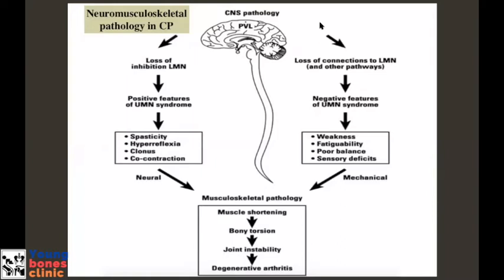The presentation can be positive or negative. Positive signs are mostly spasticity, hyperreflexia, clonus, and contractions of muscles. Negative signs include weakness, poor selective control, poor balance, and sensory deficits. Ultimately all of them lead to multiple musculoskeletal problems, especially muscle shortening, bone torsion, and joint instability — all basically lifelong disorders because of spasticity and uncontrolled tone over a period of time.